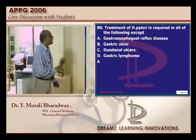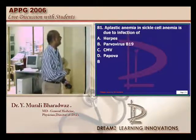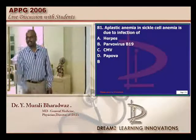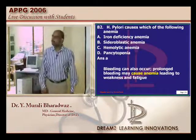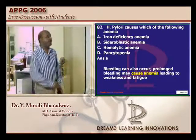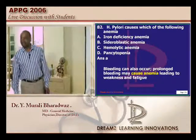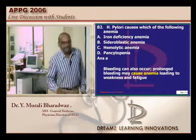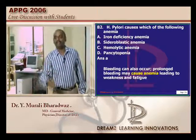Let's go to the next question. H. pylori can cause gastric ulcer, duodenal ulcer, and gastric lymphoma. Aplastic anemia and sickle cell anemia are caused by parvovirus B19. Can H. pylori cause anemia, doctor? Definitely — when it causes so many ulcers, it leads to blood loss, leading to iron deficiency anemia. Sometimes for a few questions we need to think much more simply — that is what the examiner asks you.